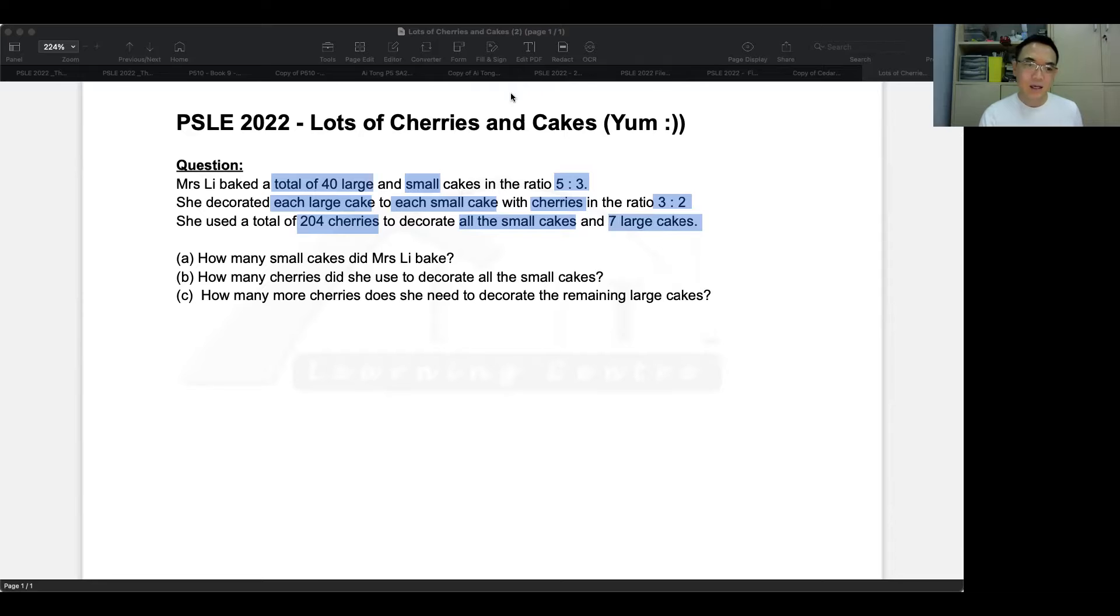The first question is, how many small cakes did she bake? Second one, how many cherries did she use to decorate all the small cakes and see how many more cherries does she need to decorate the remaining large cakes? I'll be using the ratio method to solve this question.